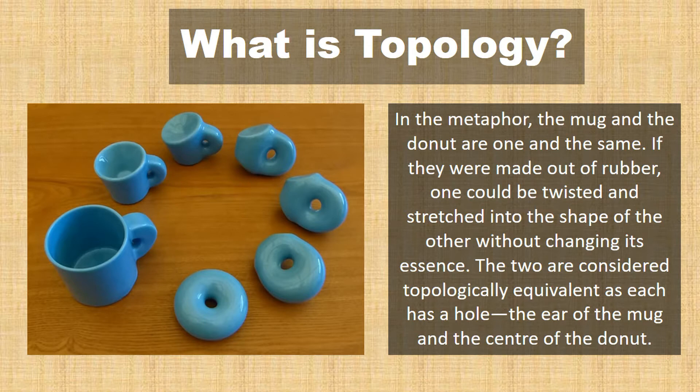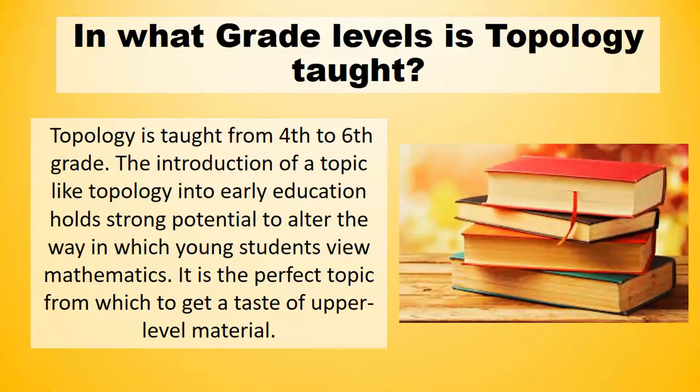In the metaphor, the mug and the doughnut are one and the same. If they were made out of rubber and one could be twisted and stretched into the shape of the other without changing its essence, the two are considered topologically equivalent as each has a hole.